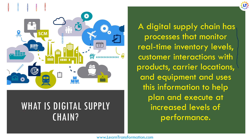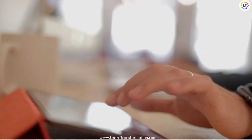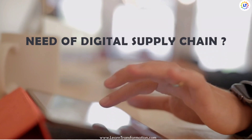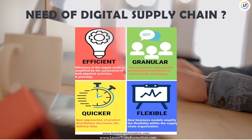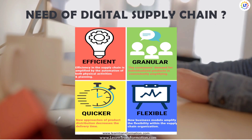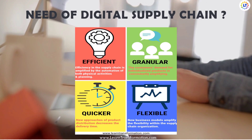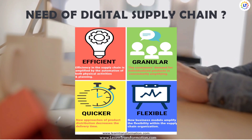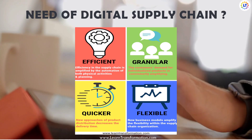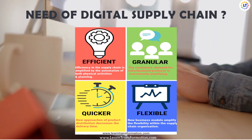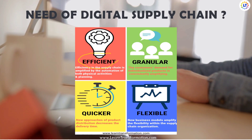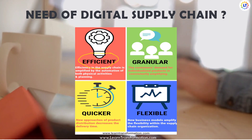Digital supply chains have become a well-known approach to augment conventional supply chain. On a base level, there are not many contrasts between a conventional and digital supply chain — both include sourcing materials, transforming the material into a product, distributing the product, and then selling it. Nonetheless, digital supply chains can follow and finish these undertakings through computerized digital cycles that empower greater efficiency, automation of both physical activities and planning. Customer demand for individualized products is consistently amplifying, new approaches to product distribution decrease delivery time, and new business models amplify flexibility within supply chain organizations.